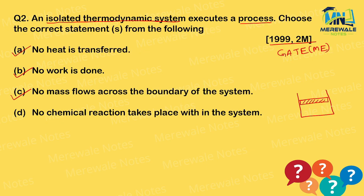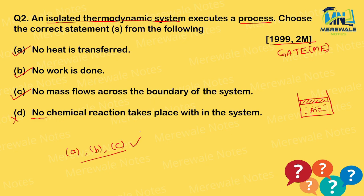For example, consider air molecules inside a piston-cylinder assembly that is insulated and isolated. Chemical reactions can happen inside. Note the difference: insulated means no heat transfer, but isolated means no work, heat, or mass transfer. So 'no chemical reaction' is a wrong statement, making D incorrect. A, B, and C are the correct options.